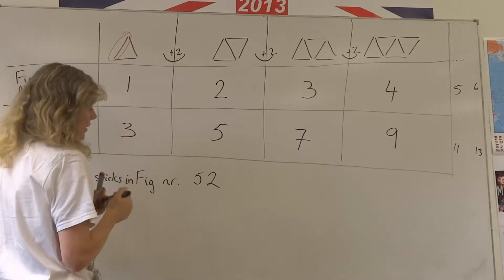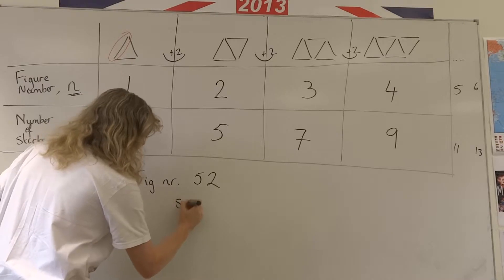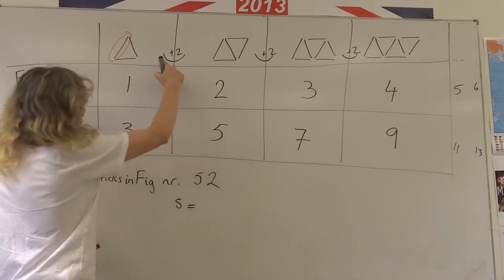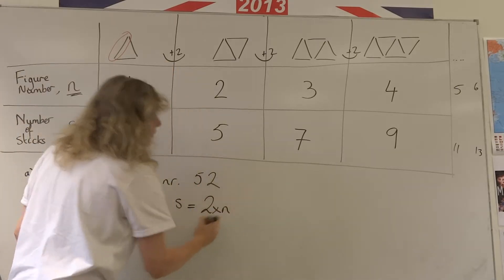This adding number here is extremely important that to get the number of sticks, which we would call s. Sticks is the number that we added, two multiplied by n.